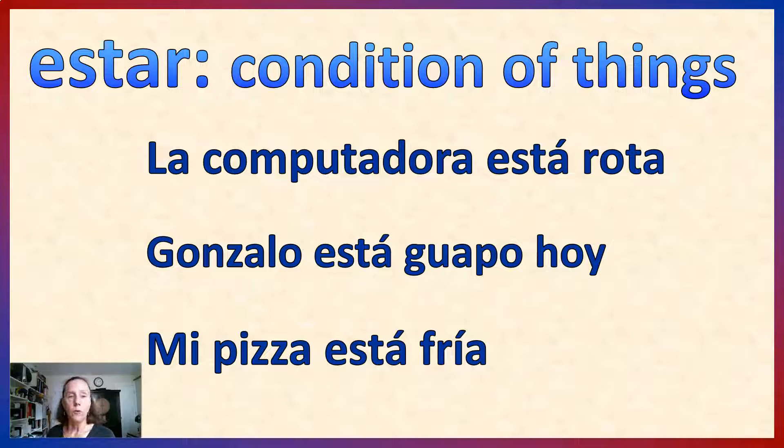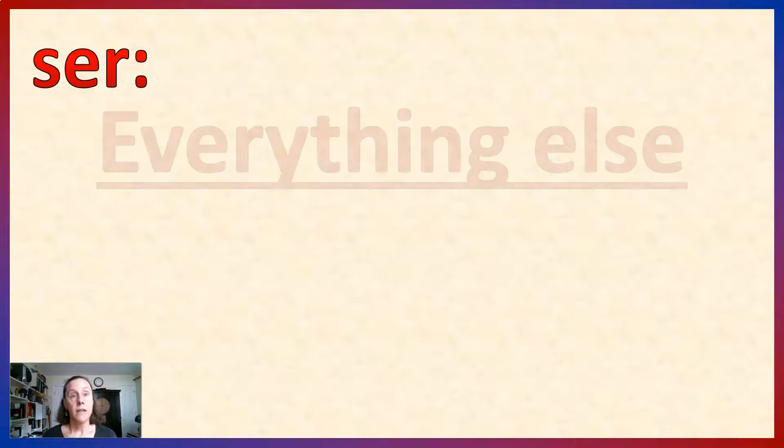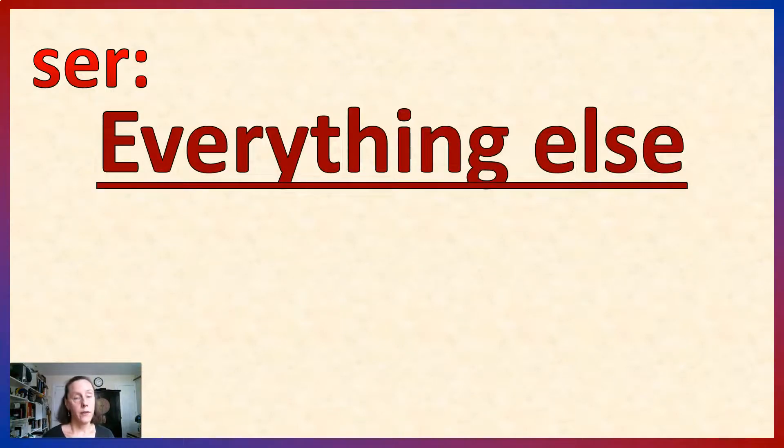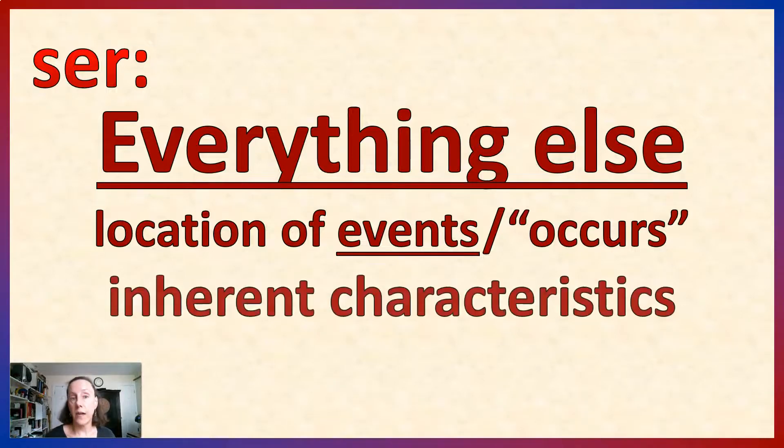Sometimes it's helpful to look at ser in terms of contrast. So when we do that, first of all, the key thing is that everything else that is not where you are, how you are, and the condition of things, is going to be ser. Included in that everything else is location of events, or another way of saying it is the idea of something occurring, and those inherent characteristics that we're talking about. So, let's do a couple of examples to clarify these uses.